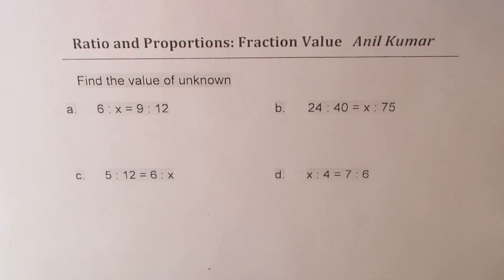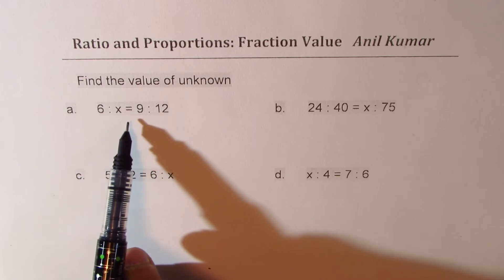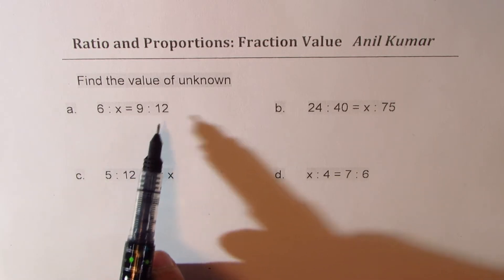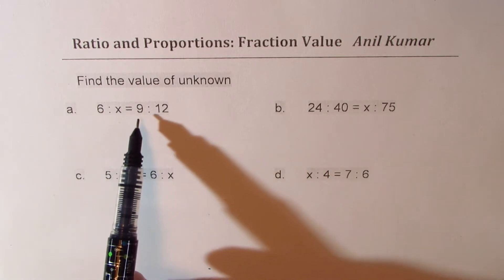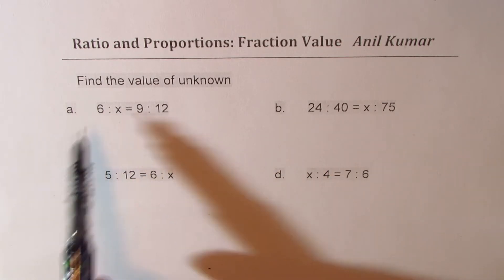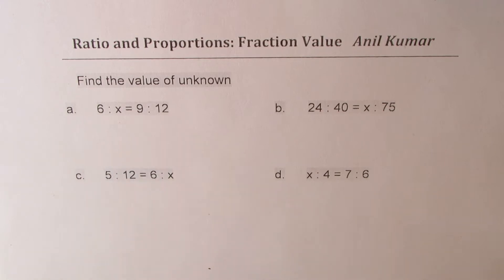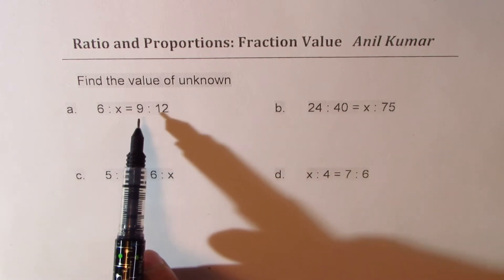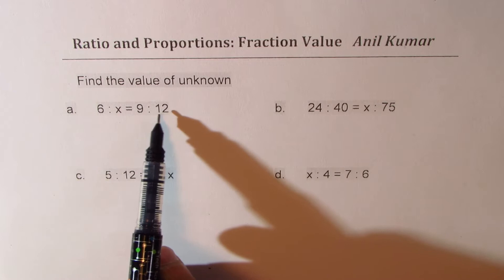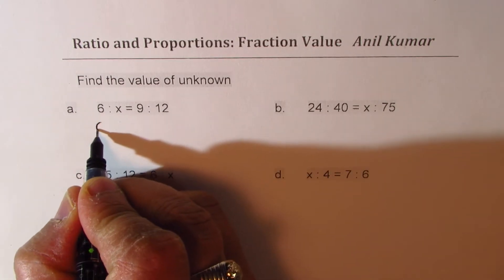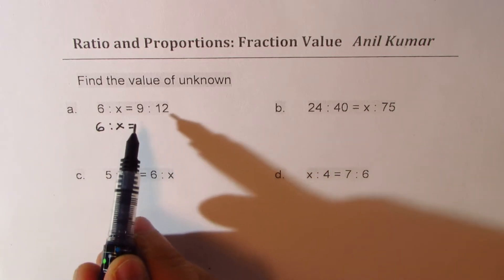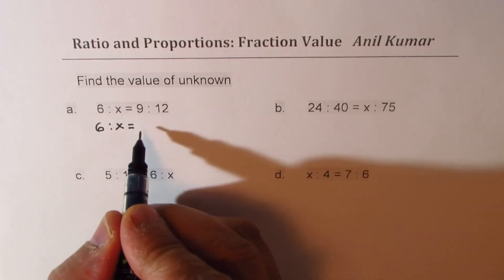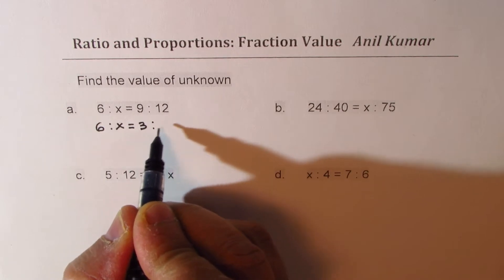So let's take up the very first example which is 6 to x is equal to 9 to 12. Now in this case, as you can see, 9 is not a multiple of 6. But there is another important thing. 9 is to 12 can be simplified. So I could actually write this as 6 is to x is equal to, dividing both of them by 3, I could get this as 3 is to 4.